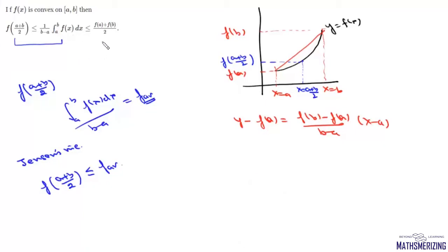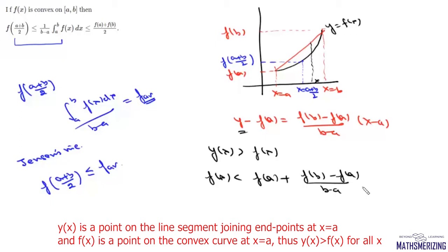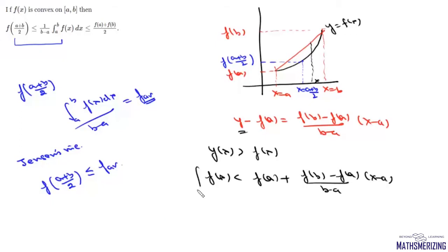Now we come to the second part. At any point x, the value y on the chord will be greater than f(x). So we can write f(x) ≤ f(a) + (f(b) − f(a))/(b − a) · (x − a). Now we take the integral from a to b of f(x) dx.